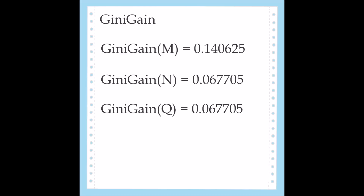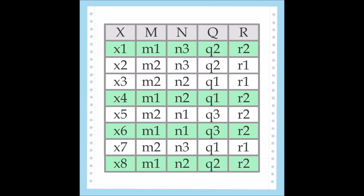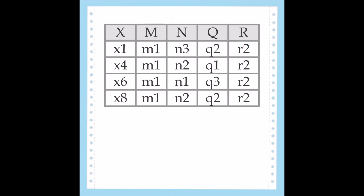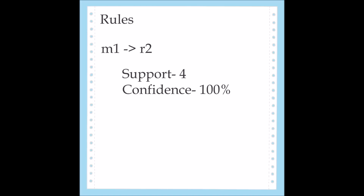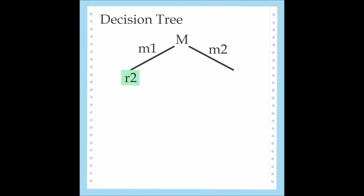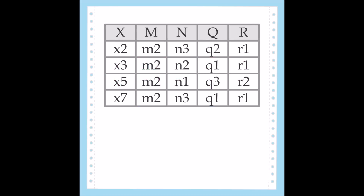We can use M as our splitting attribute in constructing our decision tree. M can be M1 or M2, so our tree has two branches. Looking at our original table, rows X1, X4, X6, and X8 contain M1. Notice that the decision feature in all four rows is R2. We can use this to construct our first rule: M1 implies R2. It has a support of 4 and a confidence of 100%. So branch M1 leads to R2. Now we can start working with M2. Tuples X2, X3, X5, and X7 contain M2. Let's separate those out into a separate table.